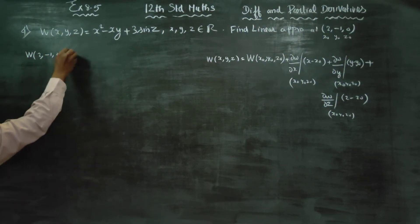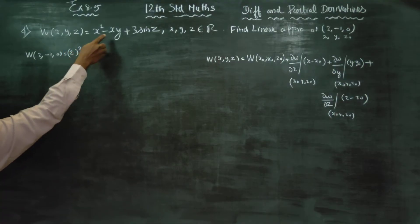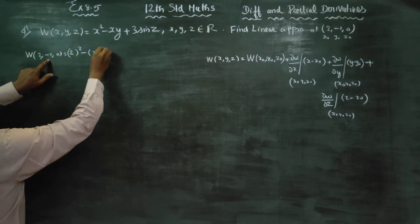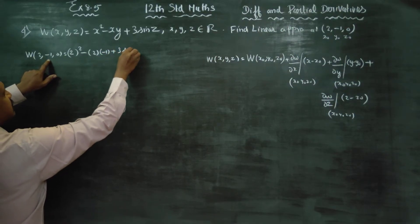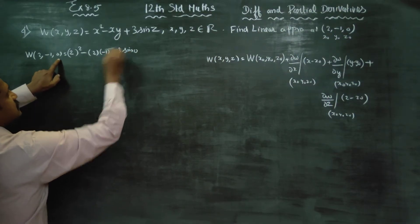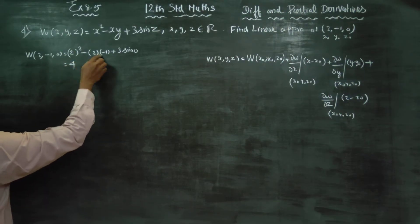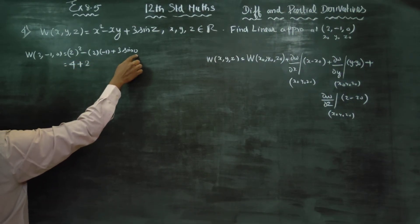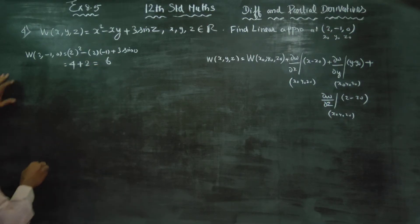Substituting the point (2, minus 1, 0): 2 squared minus x-order value 2, y-order value minus 1, plus 3 sin(z). Sin(0) answer is 0. Then 2 squared becomes 4, minus into minus gives plus 2, sin(0) is 0, so 0 into 3 becomes 0. The answer is 6.